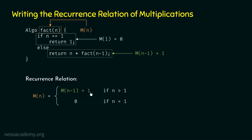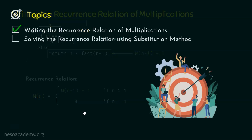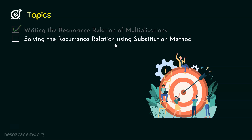Now we know the number of multiplications required to solve these sub-problems, so we are ready to write the recurrence relation of multiplications: m(n) = m(n-1) + 1 if n > 1, and m(n) = 0 if n = 1. This is the recurrence relation of multiplications of factorial of n. Let's now move to solving this recurrence relation using substitution method.